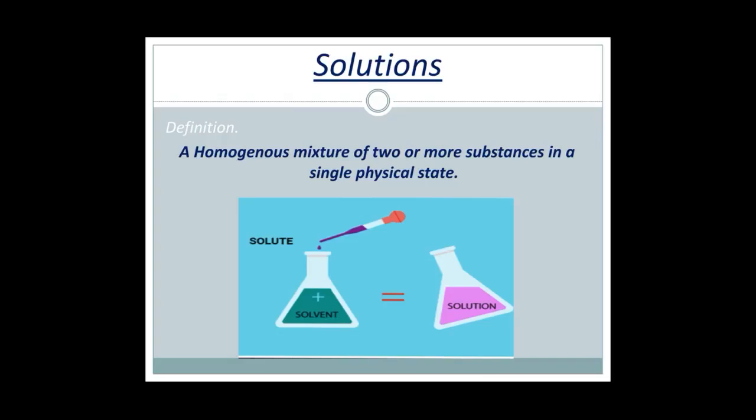A solution is defined as a homogeneous mixture of two or more substances in a single physical state. Here, single physical state means a solution always exists in one state only. It may be a solid state, a liquid state, or a gaseous state, but it must be only one state. A homogeneous mixture means a mixture which has only one form or the same form throughout.